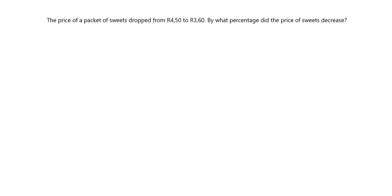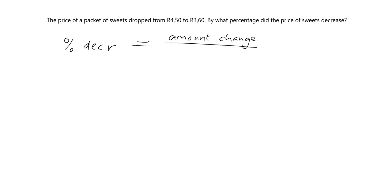Now we're going to look at percentage decrease. A packet of sweets drops in price from 4 rand 50 to 3 rand 60 — what percentage did the price decrease by? You can use the same formula: end minus start over start, times 100. For percentage decrease, just as with percentage increase, you want to know how much things changed in relation to the starting price, then turn it into a percentage.